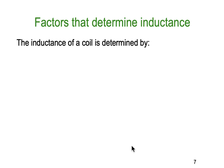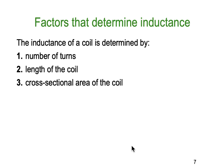Just like we had factors that affect resistance, we also have factors that affect inductance. The inductance of a coil is determined by: the number of turns on the inductor; how long the coil itself is — not the length of the wire but the length of the coil; the cross-sectional area of the coil itself — again, the coil's cross-section, not the wire's; and the permeability of the core, meaning how well the core can conduct a magnetic field.